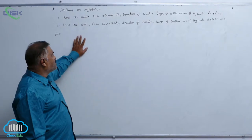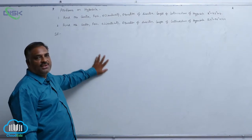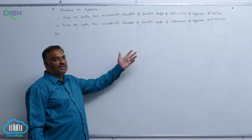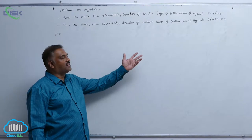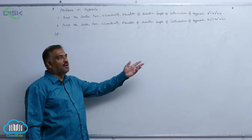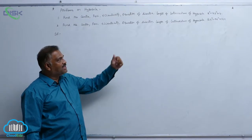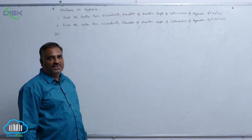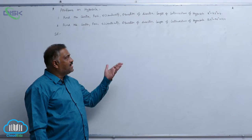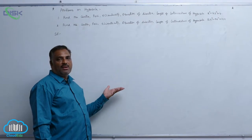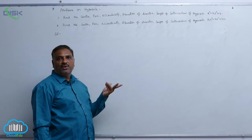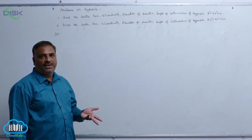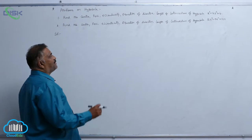Find the center, foci, eccentricity, equation of directrix, and length of latus rectum of the hyperbola. The first equation is x² - 4y² = 4, and the second equation is 16y² - 9x² = 144. Let us see them one by one.